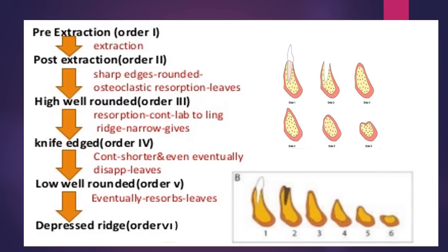In Order 2, any sharp edges remaining are rounded off by external osteoclastic resorption, leaving a high well-rounded residual ridge — that is Order 3. As resorption continues from the labial as well as lingual aspects, the crest of the ridge becomes increasingly narrow, ultimately becoming knife-edged — that is Order 4. As the process continues, the knife-edged ridge becomes shorter and eventually disappears, leaving a low well-rounded or flat ridge — that is Order 5.